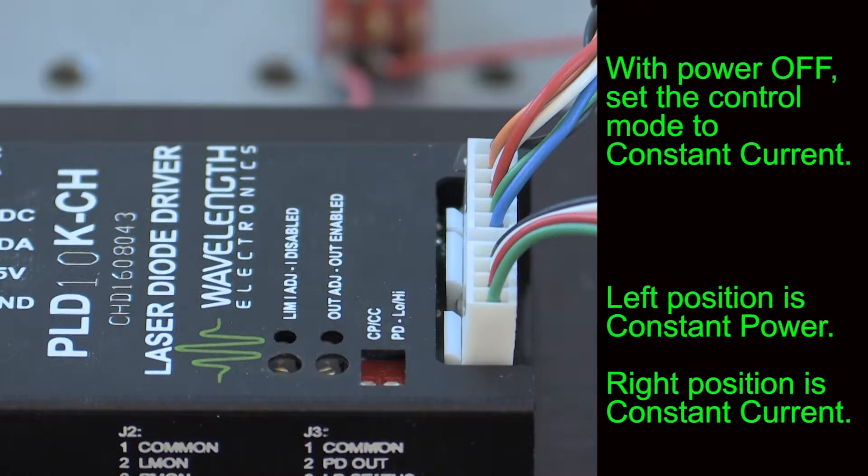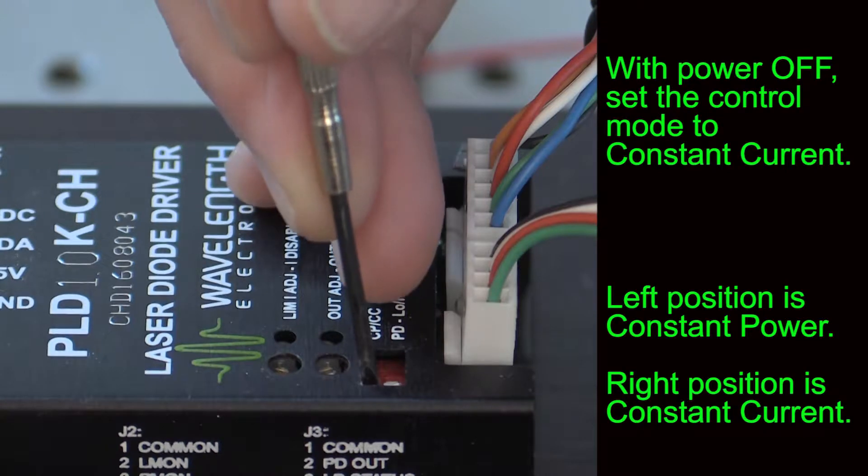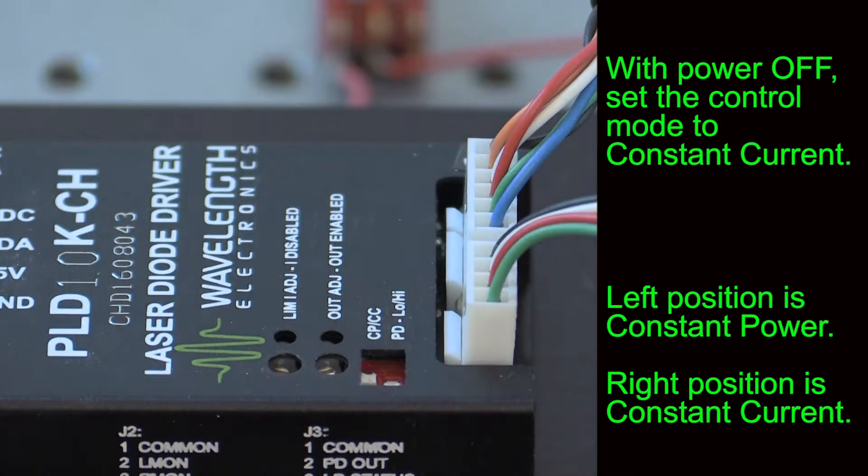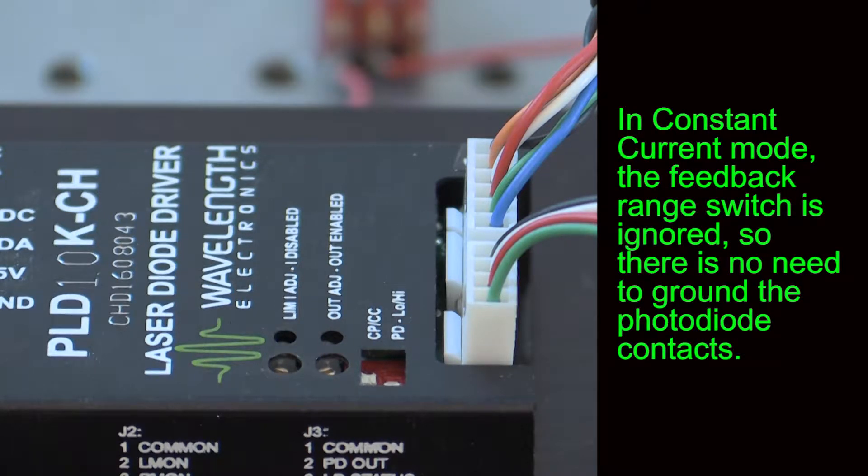Next, with the power off, set the control mode to constant current. Left position of the switch is constant power mode. Right position is constant current mode. In constant current mode, the photodiode connections are removed from the circuit. The feedback range switch is ignored, so there is no need to ground the photodiode contacts.